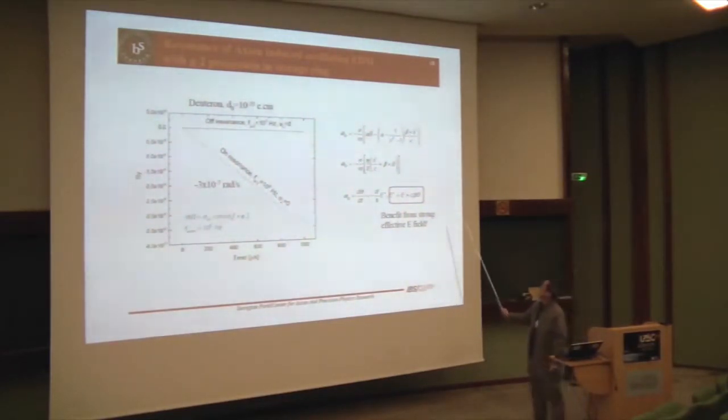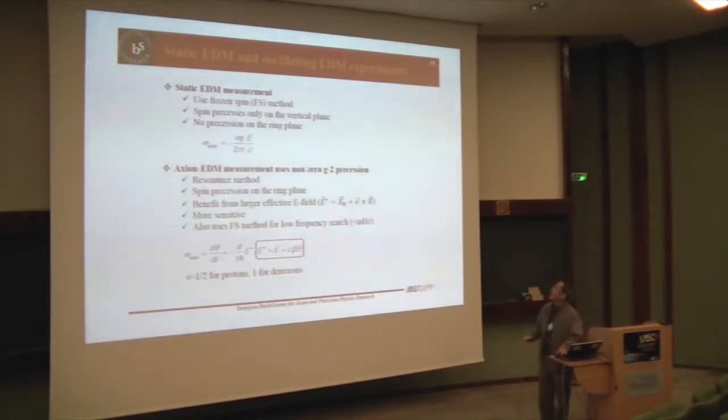One good point, good merits of this idea is, you can have a huge effective electric field, that is mostly coming from the Lorentz transform to B-field. This is very huge magnetic field, the electric field, that you can, sometimes that you cannot produce in your lab. This is the comparison of the static EDM and the axion EDM.